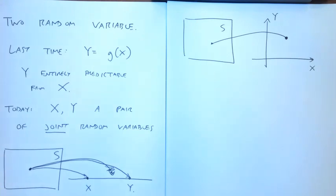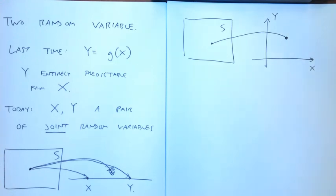In general, you could have a three- or four-dimensional random variable. Today we're going to talk about two dimensions. In courses like communication theory or stochastic signals and systems, you would deal with random vectors where every element is its own random variable.